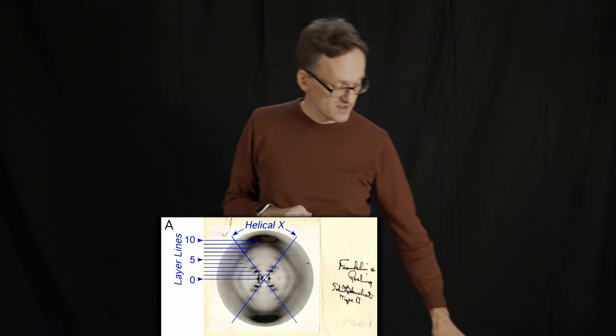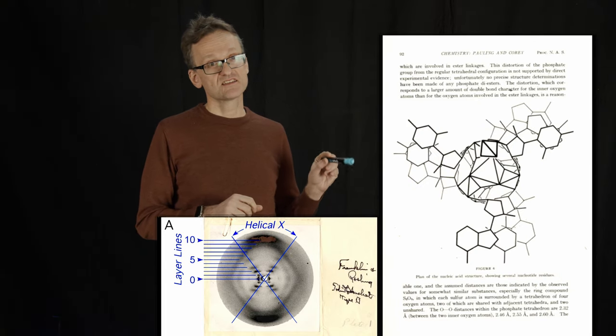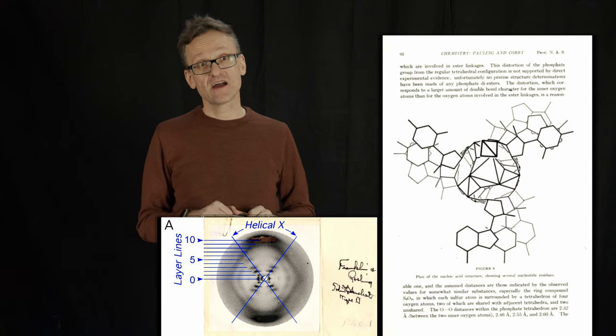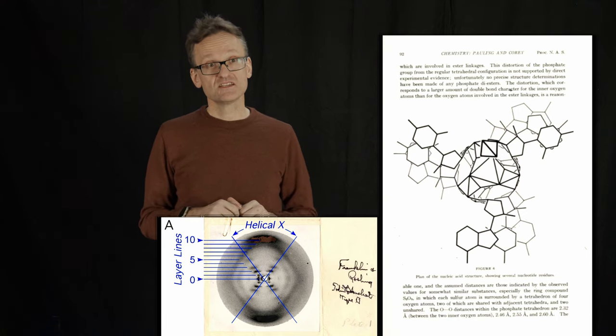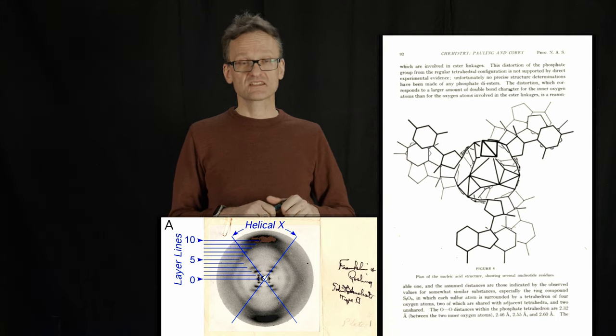So there were some very interesting models. This is a model that has the backbone of DNA in the middle of some kind of spiral staircase and then the bases of DNA pointing out and it would be a triplet of a triple helix.